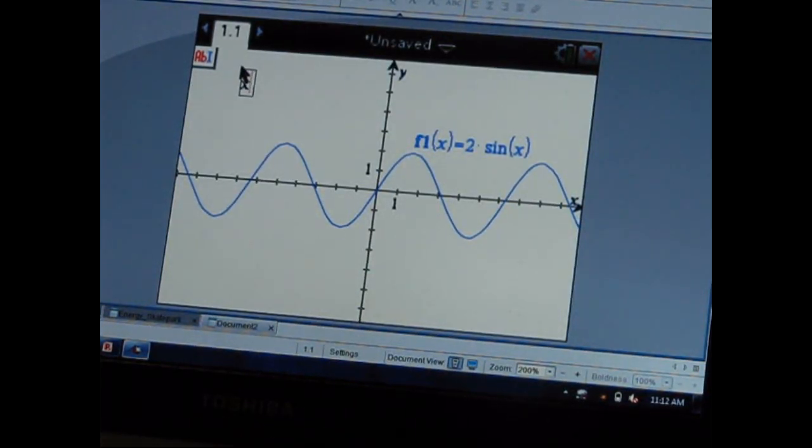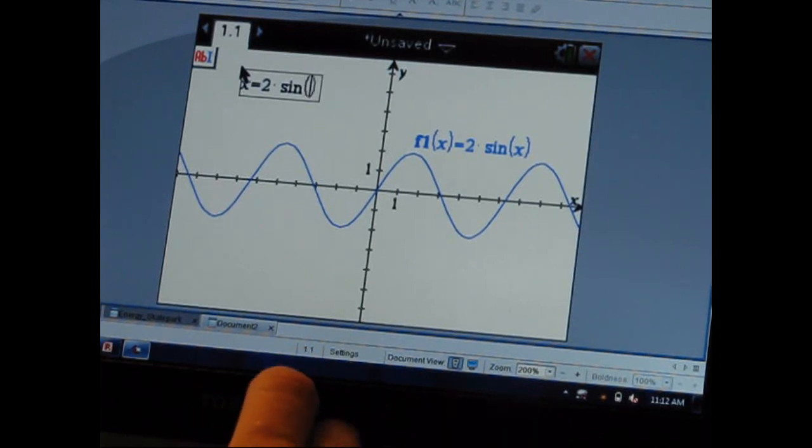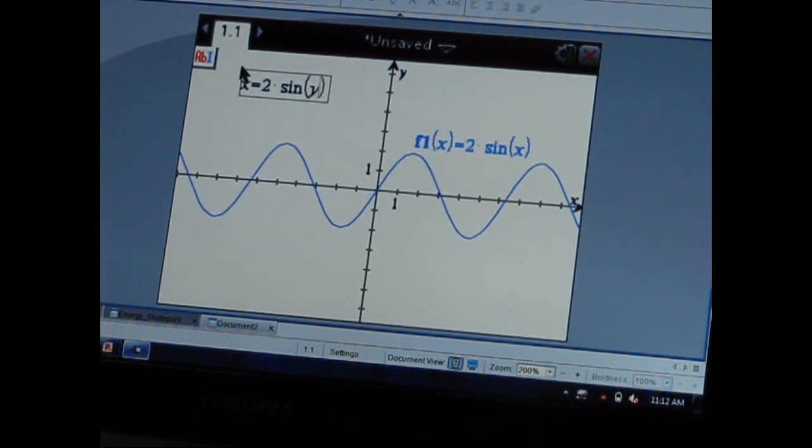and if we go and get our text tool and enter, we can type x equals 2 times sine of y and we take this text and if we drag it onto the axis system, we see that our inverse function is graphed.